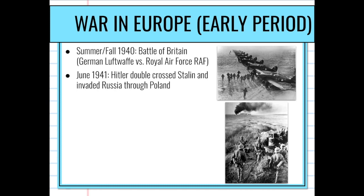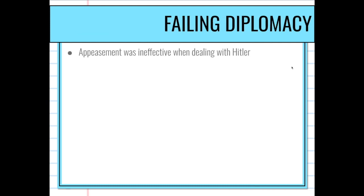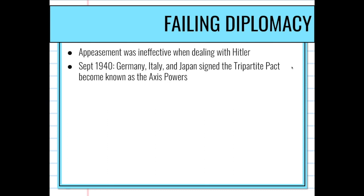By June 1941, coming back to that Non-Aggression Pact, Hitler breaks it with Stalin. Hitler double-crosses Stalin, invading Russia through Poland — a huge mistake. Stalin responds with the scorched earth military tactic, meaning everything is fair game. Troops invaded in the summer of 1941 but got stuck as summer turned into one of Russia's harshest winters on record, resulting in over a million Nazi soldiers lost in that effort.